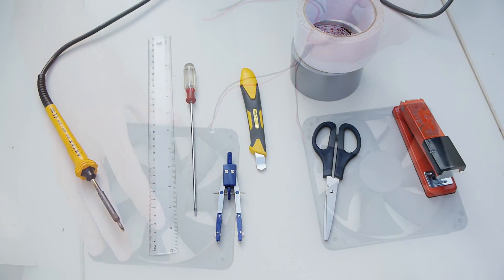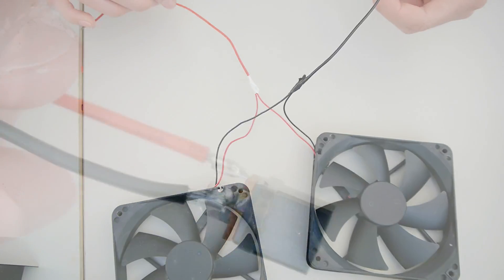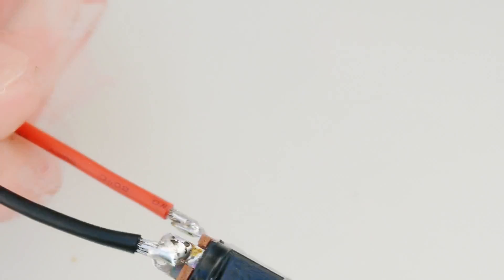The first thing we can do is solder the two power wires of the fans in parallel, and extend them out to the DC jack.